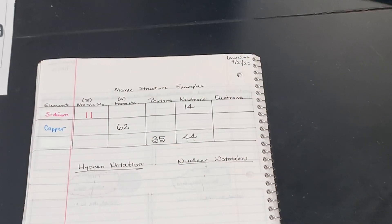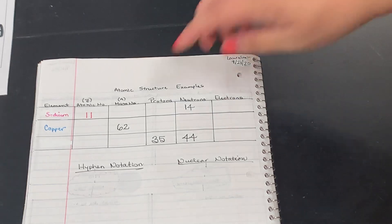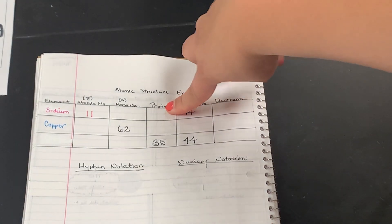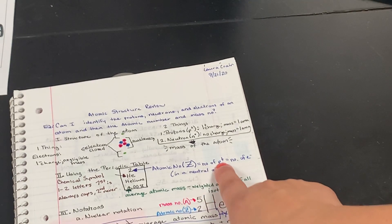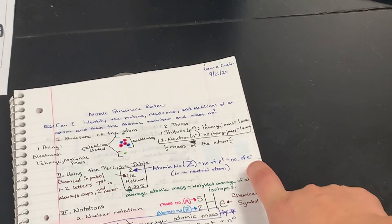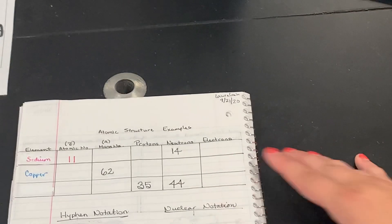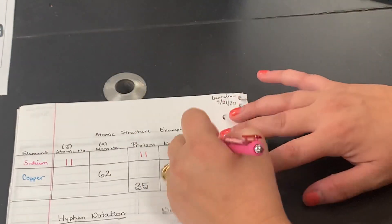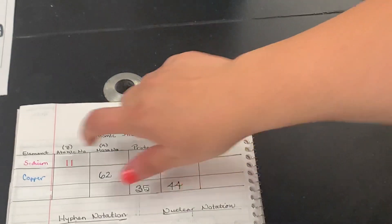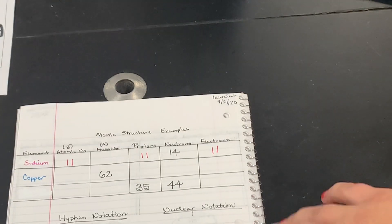Now remember, the mass number is not on the periodic table. How do we get the mass number? We add our protons and our neutrons. Well, we don't know our protons, except that we do. In our notes that we did, we said that the number of protons is going to be equal to the number of electrons, which is equal to the atomic number. So all three of those numbers should be the same. So my protons should be 11 because my atomic number was 11, and my electrons should be 11 because my atomic number was 11.